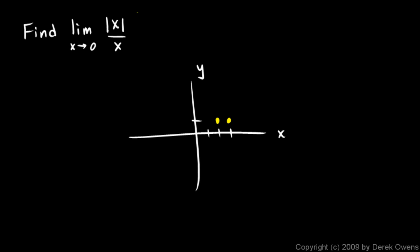If x is 0.1, we have 0.1 over 0.1. You can see for any value here we just have a horizontal line.